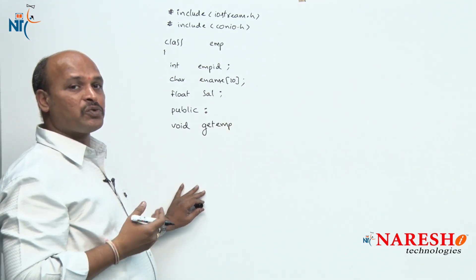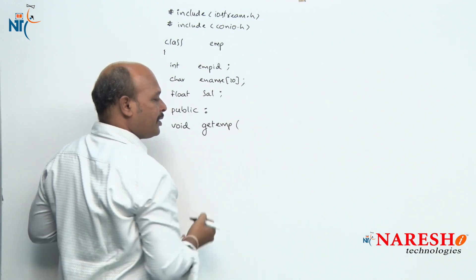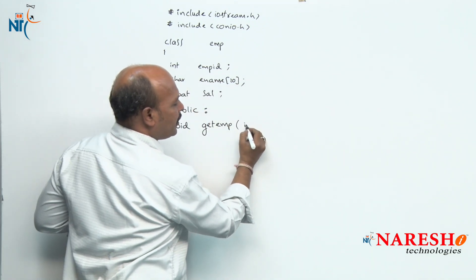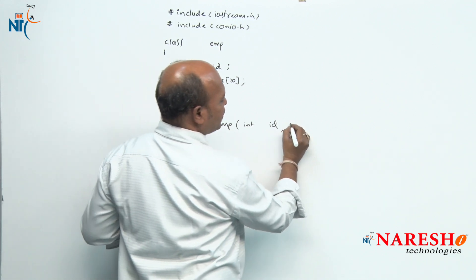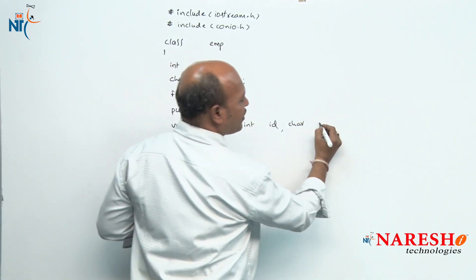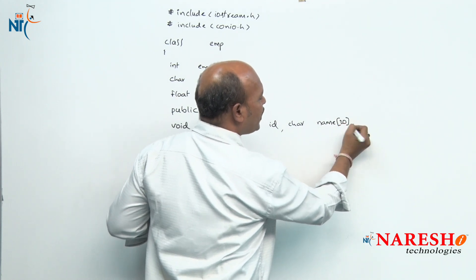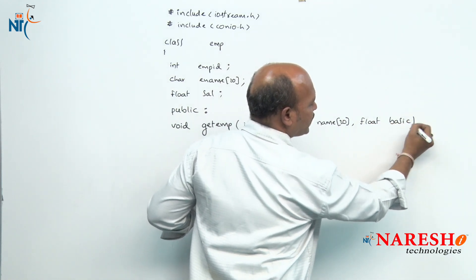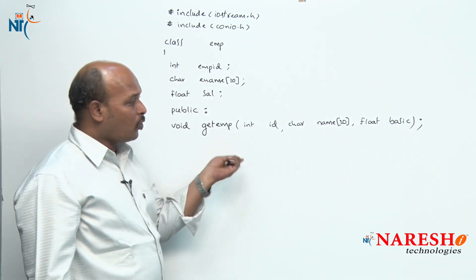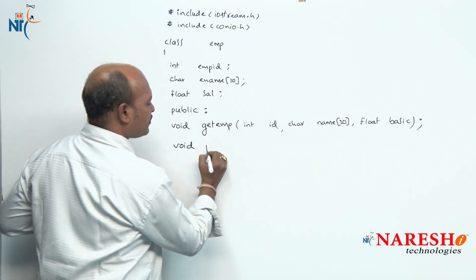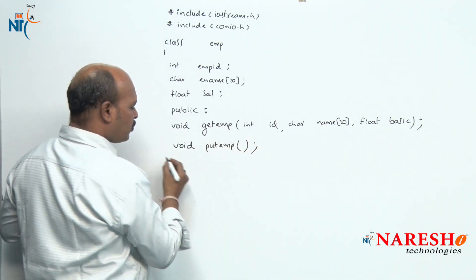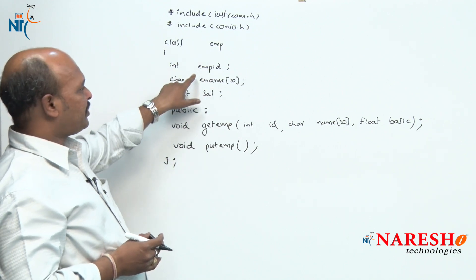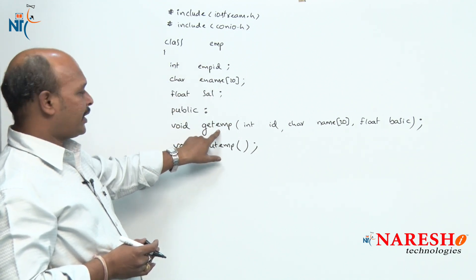Here my intention is to send arguments, so in the brackets I am going to use an arguments list. The first argument is employee id which is integer, so int id; next char for employee name, I'll use name; and float for salary, I'll use basic — then semicolon because I want to write the definition outside the class. Next, another member function void putEmp with no arguments — class definition completed.